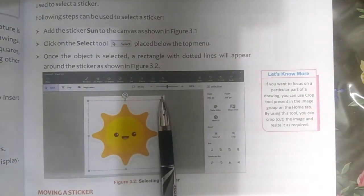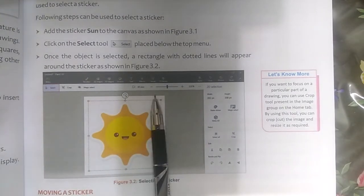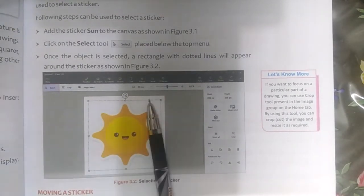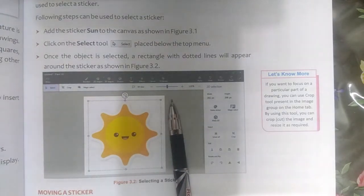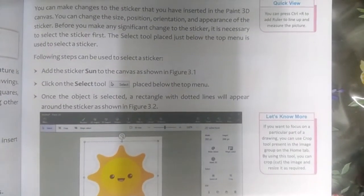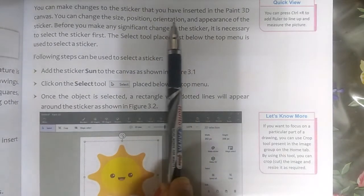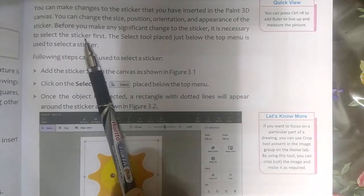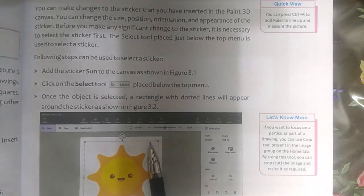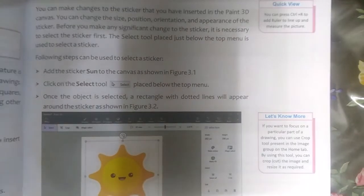यह आपकी selection lines हैं जो कि आपकी select tool ने बनाई हैं। जब भी आप select tool को press करोगे तो आपका जो भी object आपने click किया होगा उसके around यह lines बन जाएंगी और आपका object select हो जाएगा। हमें selection की need इसलिए पड़ती है क्योंकि अगर हमें size, position, orientation या appearance — इन four चीज़ों में से कोई भी change करनी है, तो it is important that our sticker is selected first।